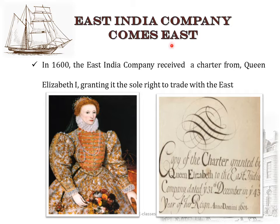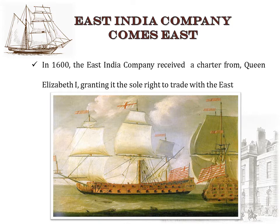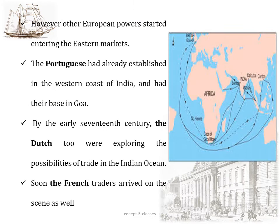The first topic is East India Company Comes East. This all started in 1600 when the East India Company received a charter from Queen Elizabeth I. A charter is a formal document issued by a monarch granting rights or powers to an individual or corporate. The charter granted the company sole right to trade with the East — meaning only the East India Company could trade, with no other English trading group able to compete. The company could travel across oceans to buy goods at cheap prices and sell them at higher prices in Europe.